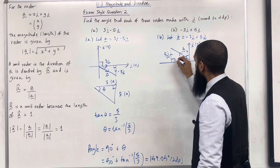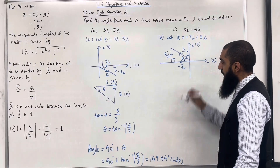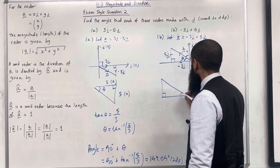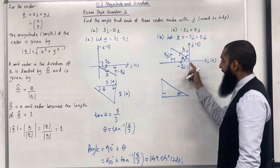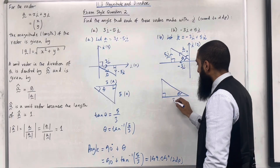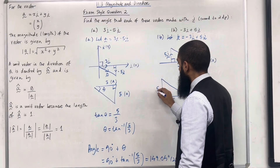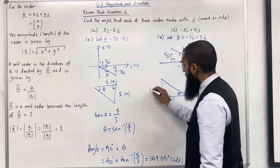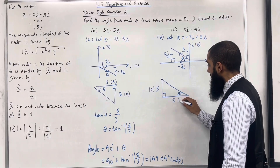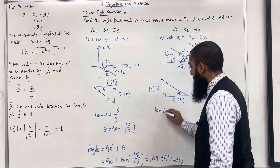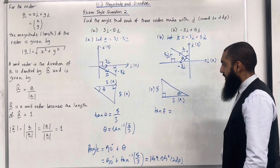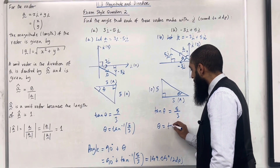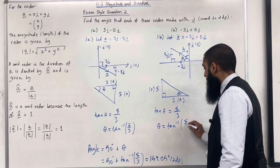Labeling the lengths: the length of the −3i component is 3 and the length of 5j is 5. Using SOHCAHTOA with opposite and adjacent: tan θ = 5/3, so θ = tan⁻¹(5/3).